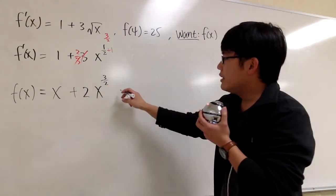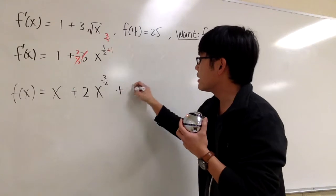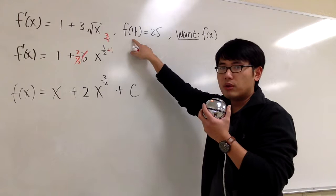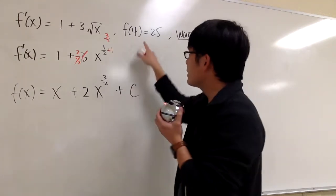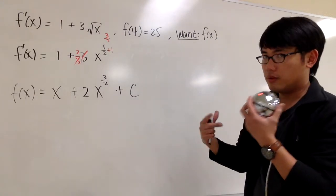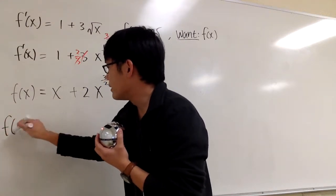And then for the original, there is some unknown number that we don't know. So we have to put a plus C, plus some constant that we don't know what it is yet. However, we do know a value f(4) is equal to 25. That means if I plug in 4 into all the x, I will be able to end up with 25 for the y value.